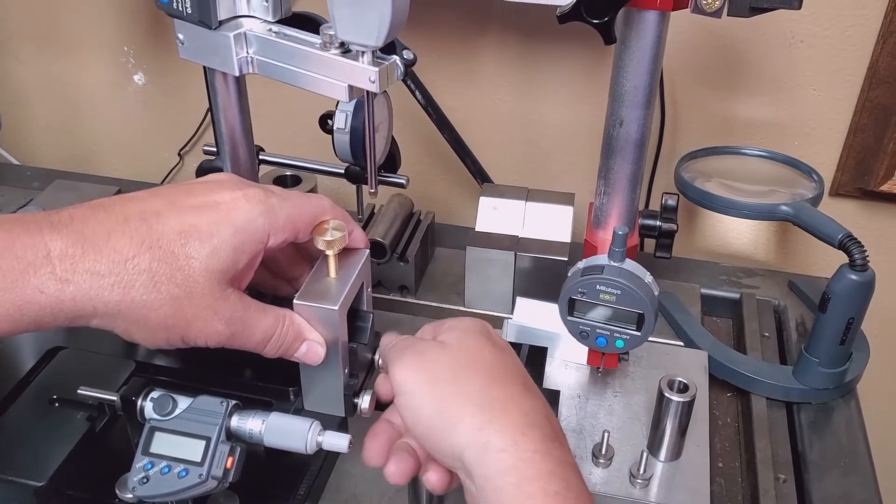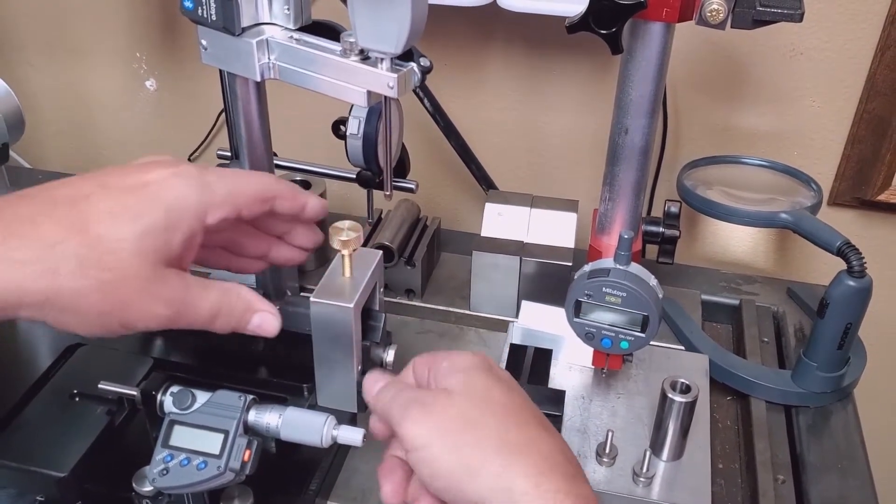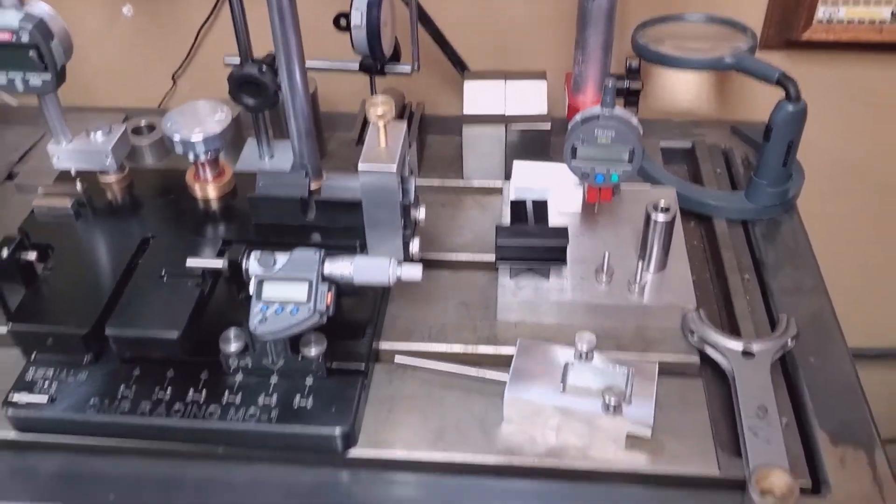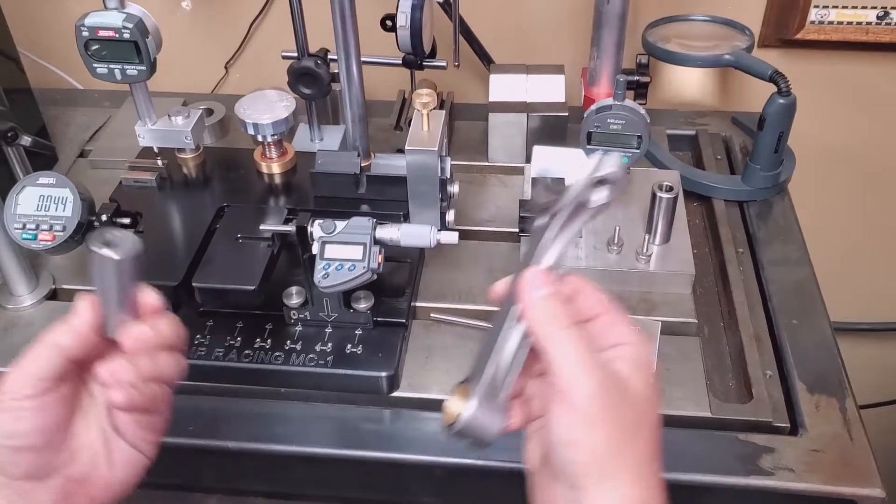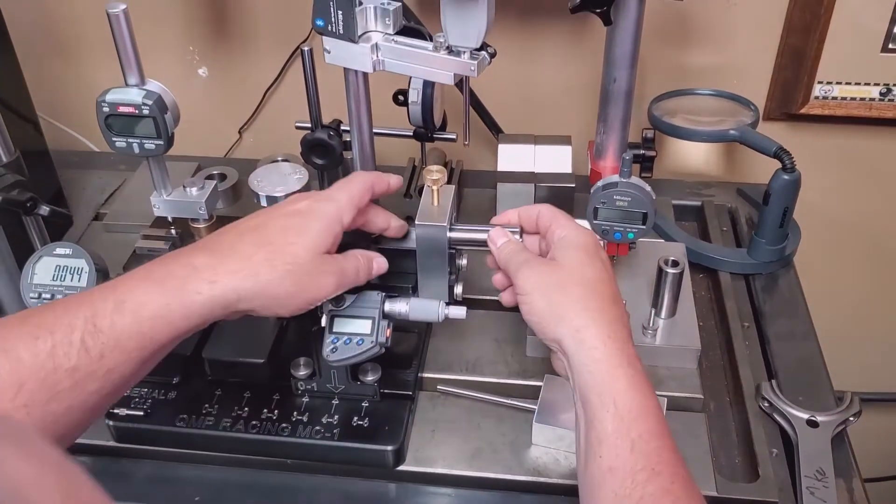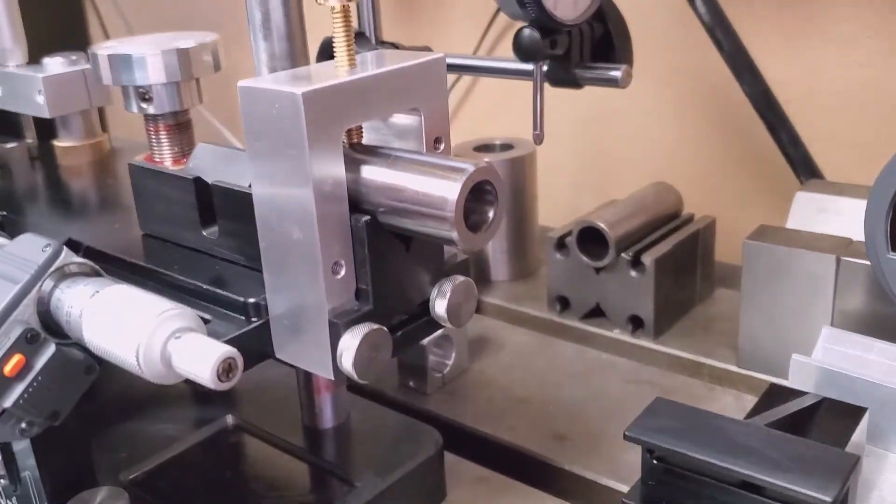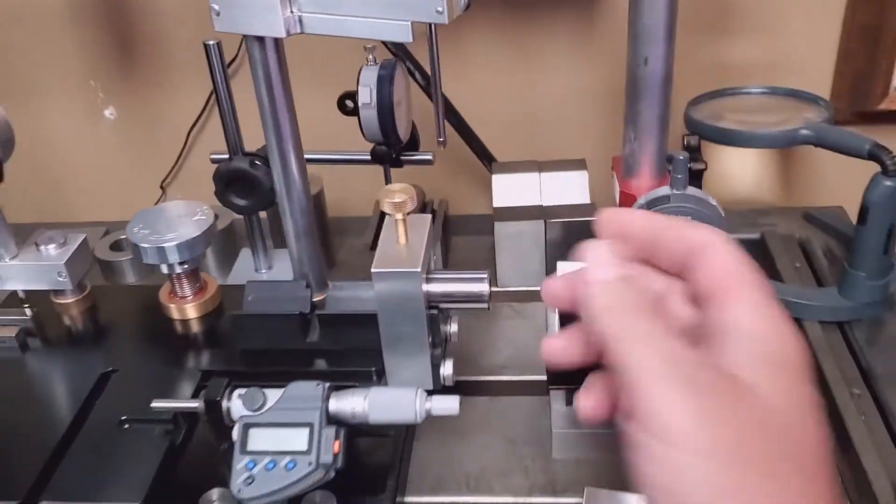One, two. Okay, so now that's nice and rigid there. So now you're going to pick a wrist pin that's going to fit in the rod that you're going to measure. That's going to go right there. Brass nut, you don't have to over tighten it, don't kill it. Just got to hold the pin rigid.